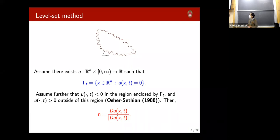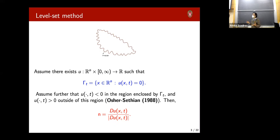This was studied in a very influential 1988 paper by Osher and Sethian. They started with numerical schemes and came up with a very cool approach: associating this front propagation problem with the so-called level set method.